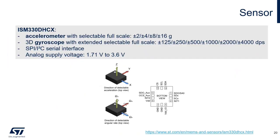The sensor — once again — is accelerometer plus gyroscope, six axes. It is the ISM330, an industry MEMS sensor. If you are interested in the details, you can find it on the link at the bottom of the slide.